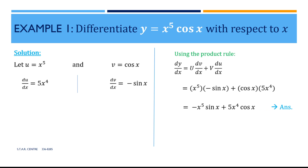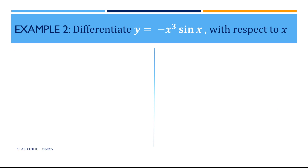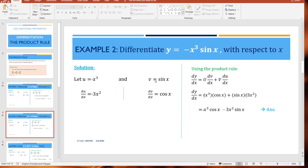Example 2: Differentiate y equal to minus x cubed times sin x with respect to x. This is again a product of two functions — minus x cubed being one of them and sin x being the other. So we let u equal minus x cubed and v equal sin x. Differentiating u, du/dx gives us minus 3x squared. And dv/dx gives us cos x.